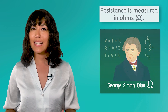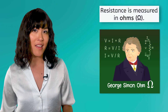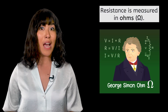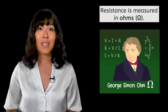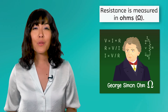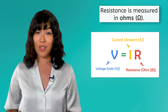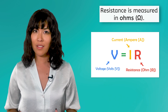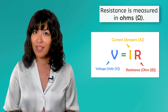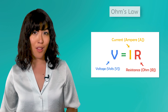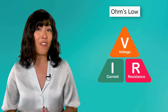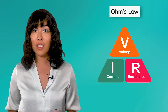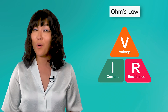Like voltage and current, resistance is a quantitative property that has its own unit known as ohms. Ohms are named after the German scientist Georg Ohm, who discovered the mathematical relationship between voltage, current, and resistance, known as Ohm's law. In the lesson PDF, you'll learn how to use this law to find any one of these variables if the other two are known.